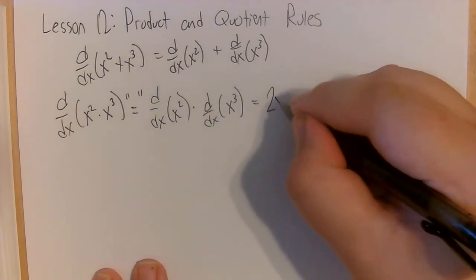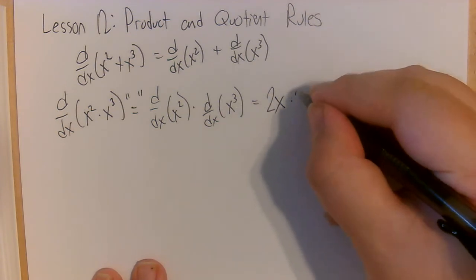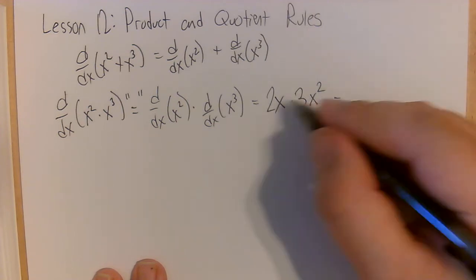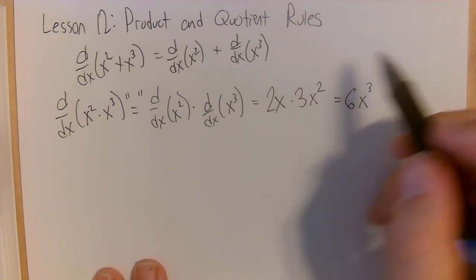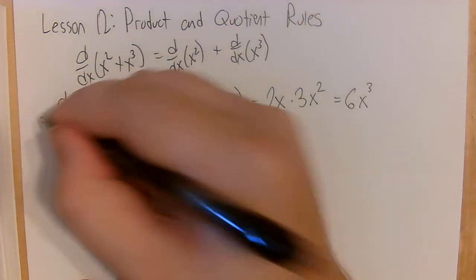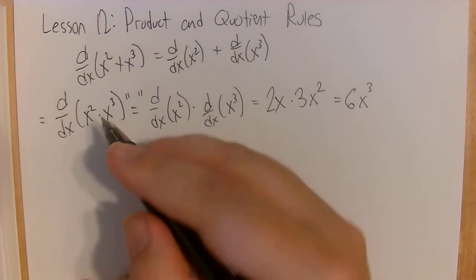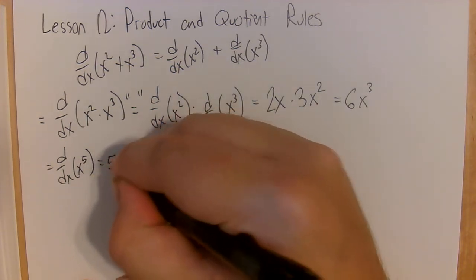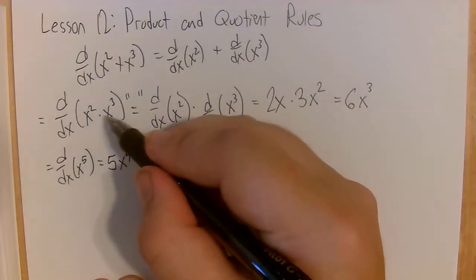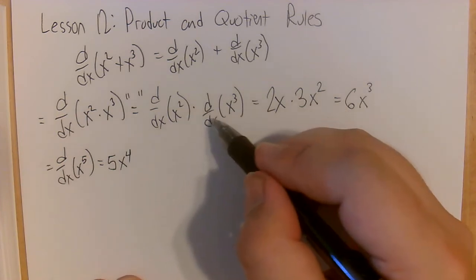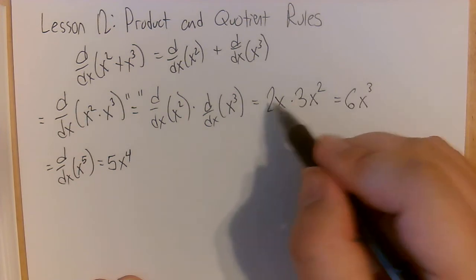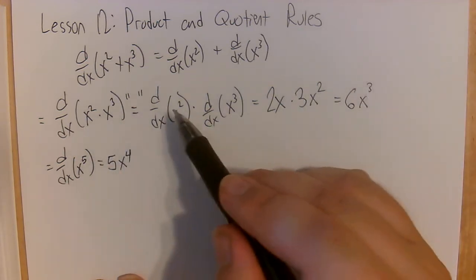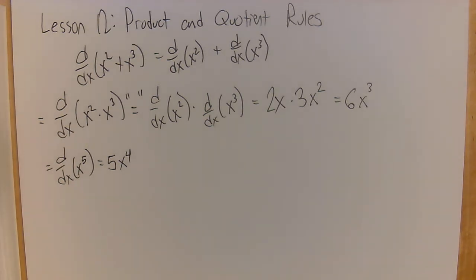We bring the two down to the front, lower the power by one, and that gives us 2x. If we do the same thing with x cubed, we bring the three down to the front and lower the power to get 3x squared. Combining these together, 2 times 3 is 6, x times x squared is x cubed, so we get 6x cubed. But on the other hand, x squared times x cubed is x to the 5th, and the derivative of x to the 5th using the power rule gives us 5x to the 4th. We get two different answers, so we can't just split the derivative up over multiplication.